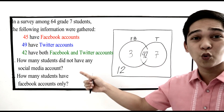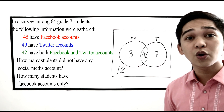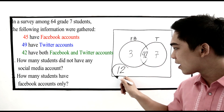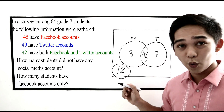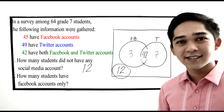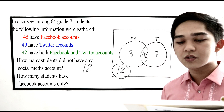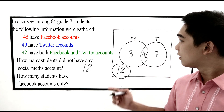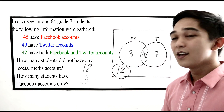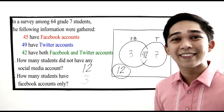Let's proceed to the questions. How many students did not have any social media accounts? That's clearly the number outside the two circles, which is 12. Next, how many students have Facebook accounts only? That's 3. That's how we solve using the Venn Diagram when we have 2 categories.